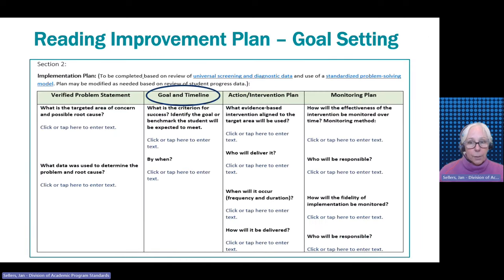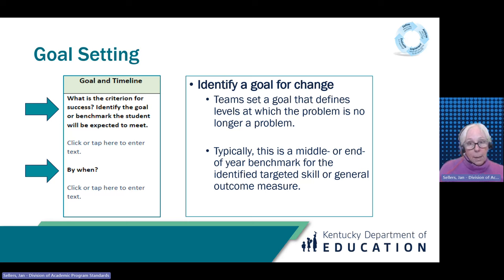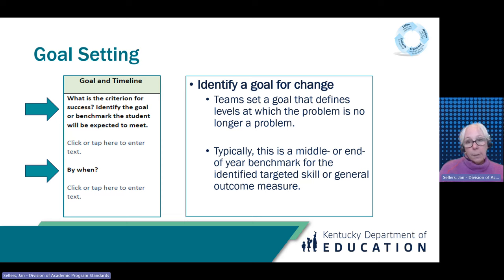Once the target area of concern has been identified, the team will need to set a clear goal with criteria and timeline for success. Depending on the target area, the team will identify the goal or benchmark the student will be expected to meet to be considered proficient in reading — when will it no longer be a problem? The team may select a middle or end-of-year benchmark for a general reading outcome or a specific skill based on data from the diagnostic assessment or the identified progress monitoring tool.